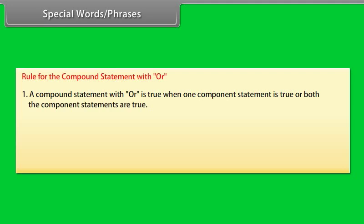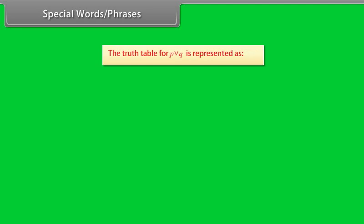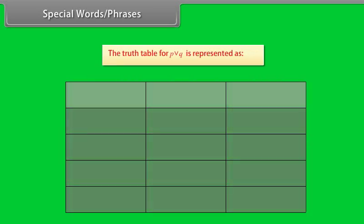Rules for OR: (1) A compound statement with OR is true when one component statement is true or both component statements are true. (2) A compound statement with OR is false when both component statements are false. Truth table for P OR Q: P true, Q true → P∨Q true; P true, Q false → P∨Q true; P false, Q true → P∨Q true.